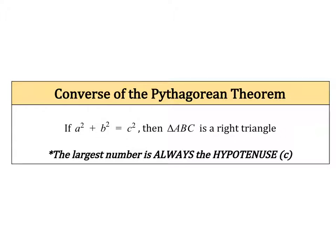The important thing to look for here is your C value. Your C value is always, always, always going to be the largest number. So find the largest side, and that's going to be your C value.